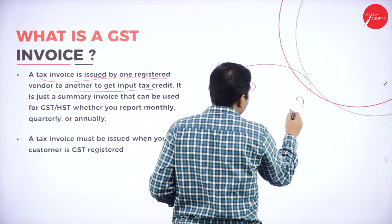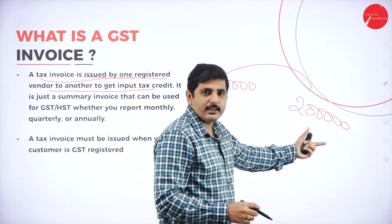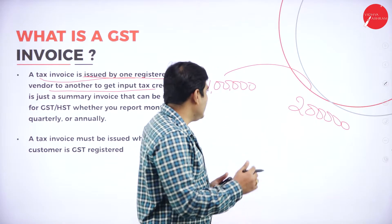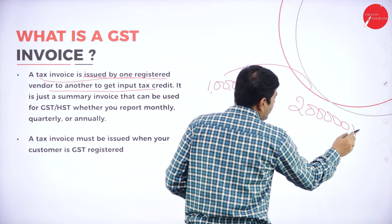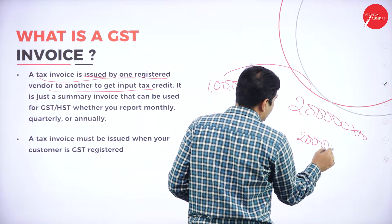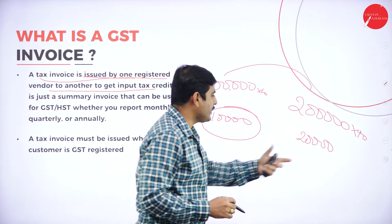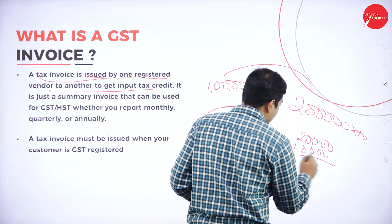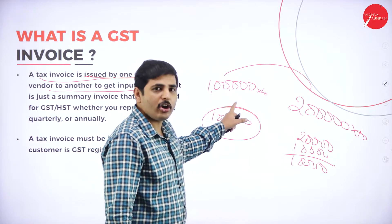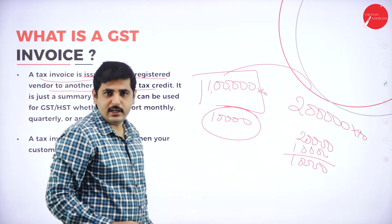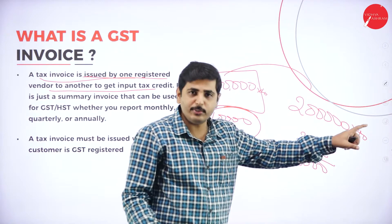I will sell these products for 2 lakh rupees after doing production or other improvements. So while selling, whatever tax I have paid — into 10% of 1 lakh, that means 10,000 rupees — here also at 10% I have to pay the output tax, 20,000 rupees. So I will get the deduction, the input tax credit to the extent of whatever I have paid as input tax. I can deduct this input tax from the output tax, so the remaining 10,000 rupees is payable to the government. In order to get this input tax credit, I should have all the documents — that is why we need the invoice.